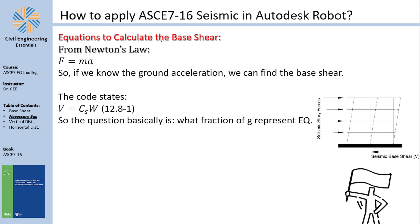In ASCE 7, why do we have base shear? Because the ground is moving back and forth, which imparts acceleration. As we know from Newton's laws, if there is an acceleration, then there is a force. So if we know the ground acceleration, we can find the base shear.